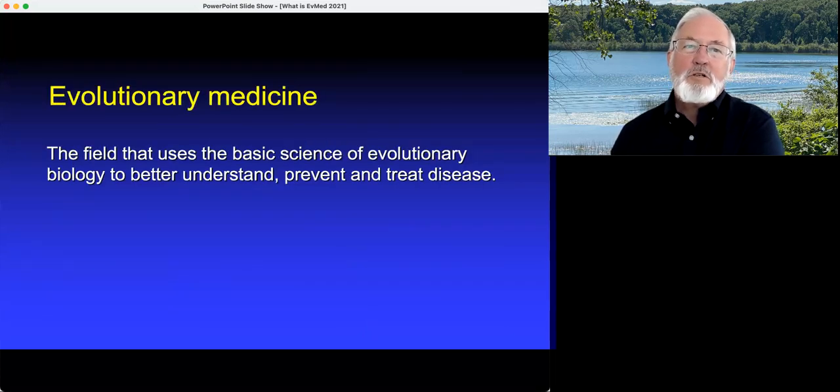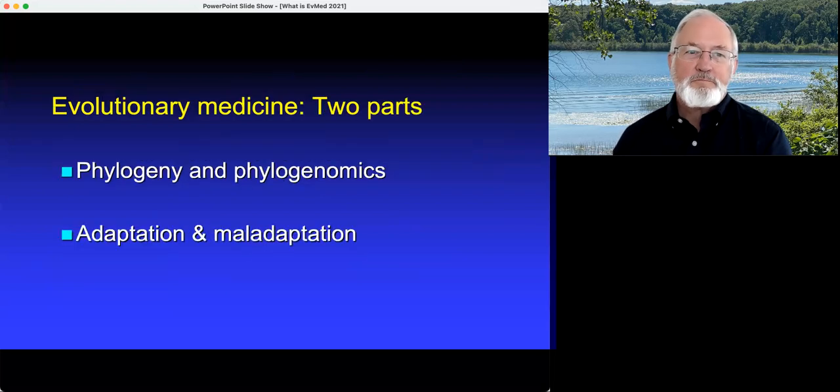Evolutionary medicine, again, is the field that uses the basic science of evolutionary biology to better understand, prevent, and treat disease. There are two parts to it, the same as the two discoveries that Darwin made. One is the unity of all life, uses phylogeny and phylogenomics to trace patterns. And the other is adaptation and maladaptation.